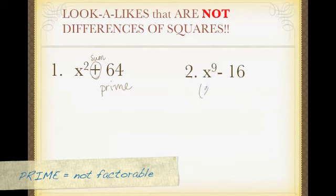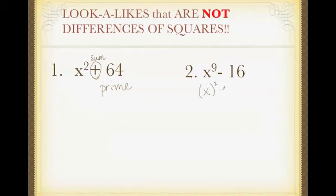For this one, when I try to write it as the difference of squares, I can write the 16 as 4 squared. But what would I put here? X to what power squared gives me 9, and there's nothing. So, I can't write it as the difference of squares, so this one is also prime.